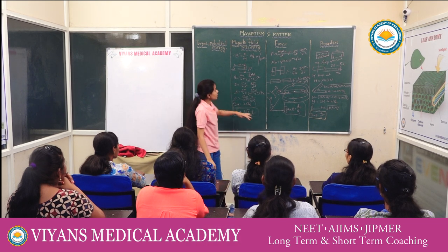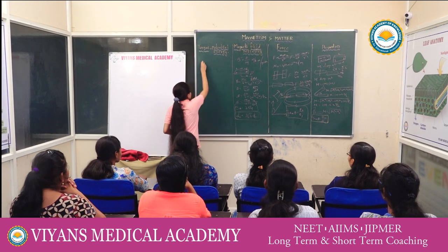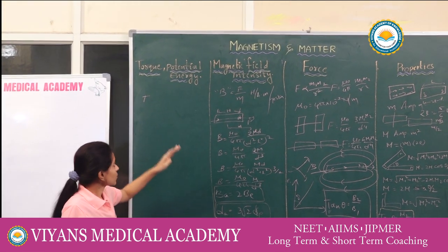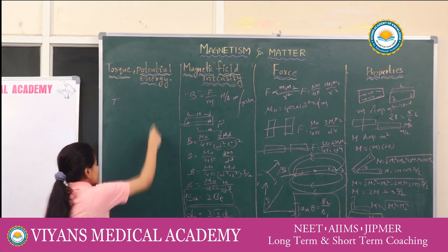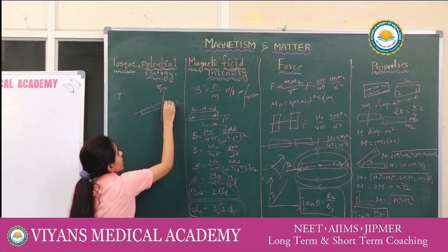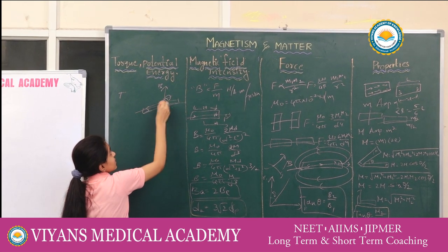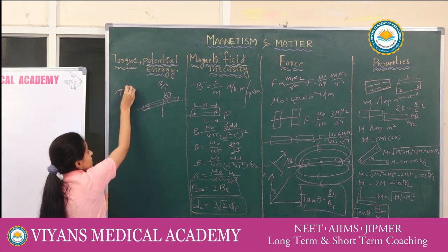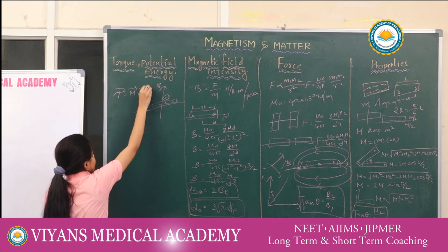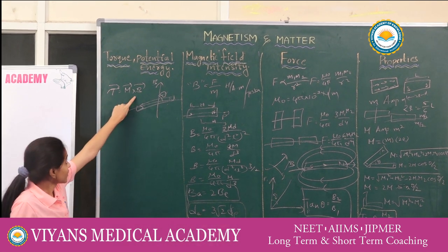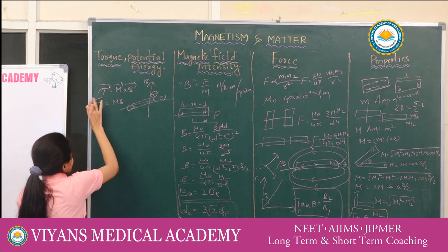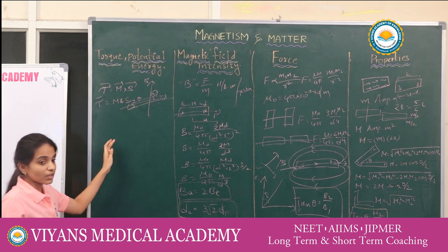Now, torque. When a magnet making an angle theta is placed in a magnetic field B, the torque is a cross product: torque τ = M × B, where M is the magnetic moment and B is the magnetic field intensity. Therefore, τ = M·B·sin θ.